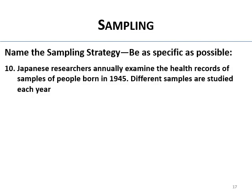Japanese researchers annually examine the health records of samples of people born in 1945, but different samples are studied each year. You've got an age cohort, but different people are being sampled — so it's not following the same group over time. That's cohort sampling.